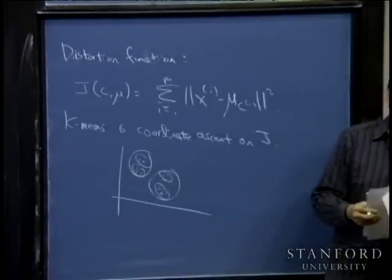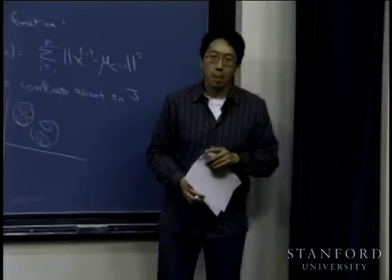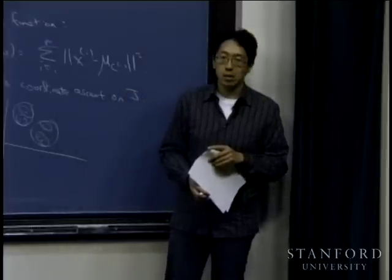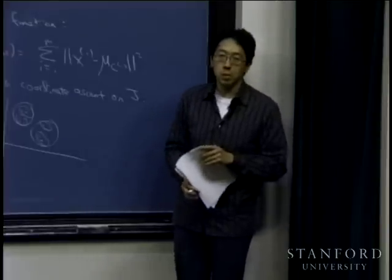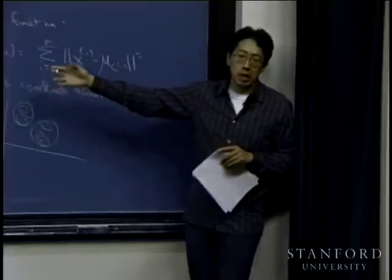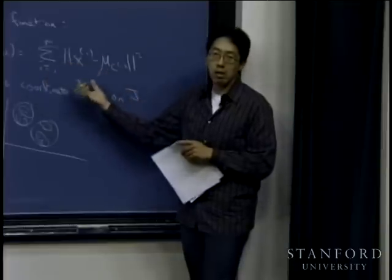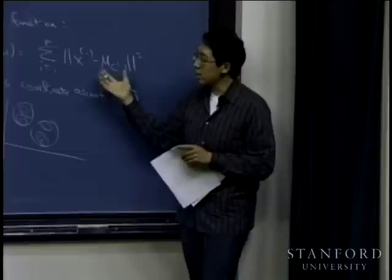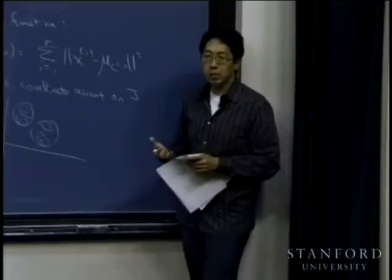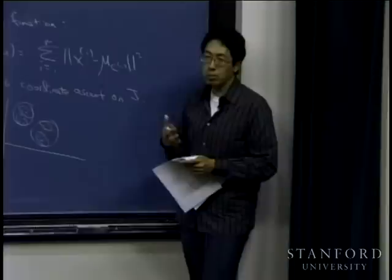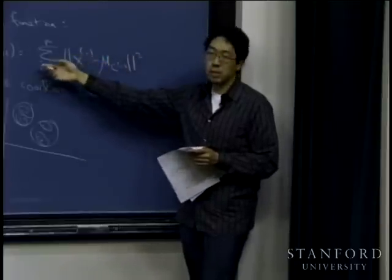What if you initialize a cluster centroid far away from the data, causing all points to cluster into one group? Yes — k-means is susceptible to local optima. The distortion function J(c, mu) is highly non-convex, so coordinate descent on it is not guaranteed to reach the global minimum. If you think k-means might run into local optima, one thing you can do is try multiple random initializations, run clustering several times, and pick the solution with the lowest value of the distortion function.